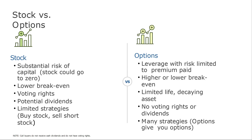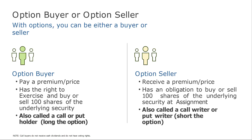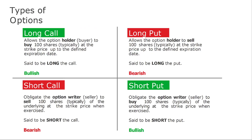The option buyer, when entering a trade, pays a premium — a guarantee that gives them the right to later exercise and buy those shares at the price established in the option contract. This is called being the holder of a call or put option — you are long the option. The seller receives the premium and has the obligation to buy or sell 100 shares if the price ends up in profit. This is called the writer of a call or put — they are shorting the option.